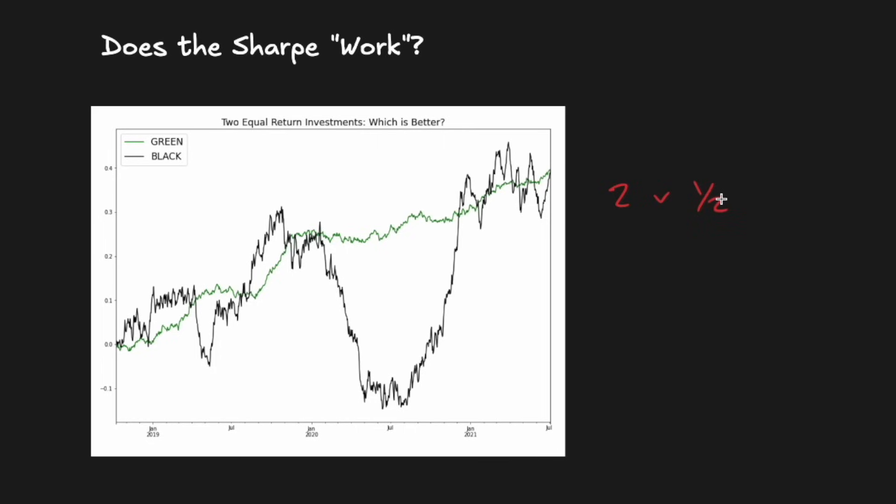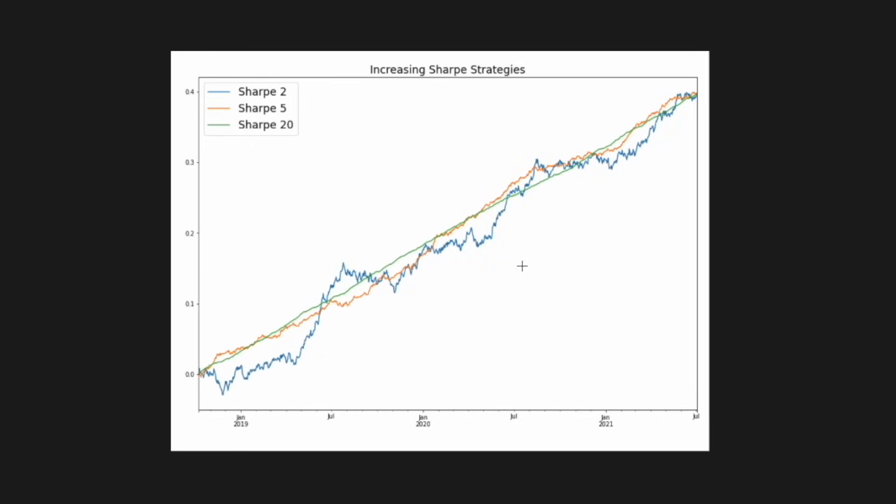To get an even better sense of what the Sharpe ratio is measuring, we've plotted hypothetical investments with increasing Sharpes here: 2, 5, and 20 Sharpes. As the Sharpes increase, the wiggles in the curve get smaller. At a 20 Sharpe, you basically have a straight line going up and to the right. A 20 Sharpe would be extremely difficult to capture at scale and represents a near-perfect arbitrage.